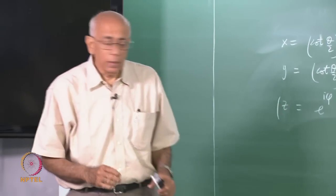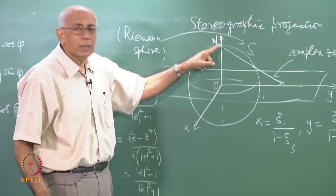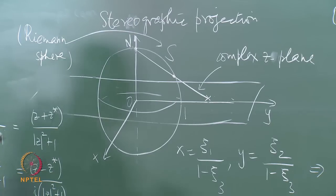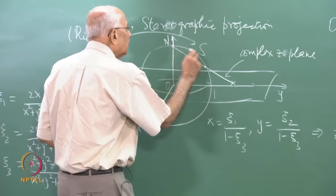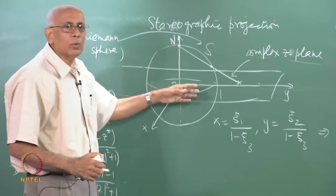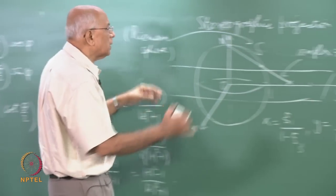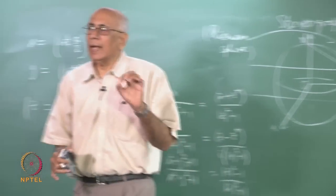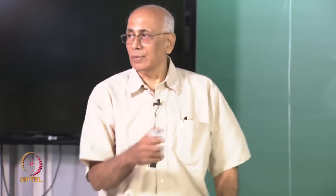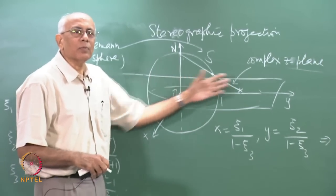There is a one-to-one mapping between the complex plane and the Riemann sphere. As a point gets closer and closer to the north pole N, the corresponding point in the complex plane goes further and further away. No matter which direction you approach N from, you are hitting infinity along some ray in the complex plane — but all those points get mapped onto N. So I can call N the point at infinity, denoted by ∞.